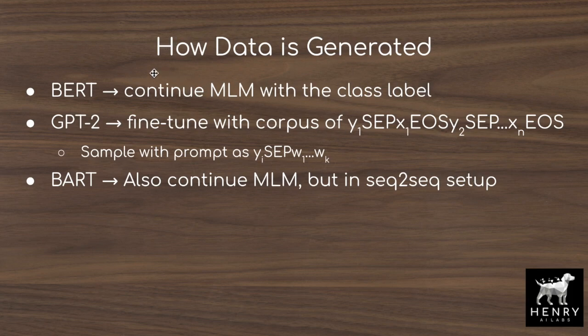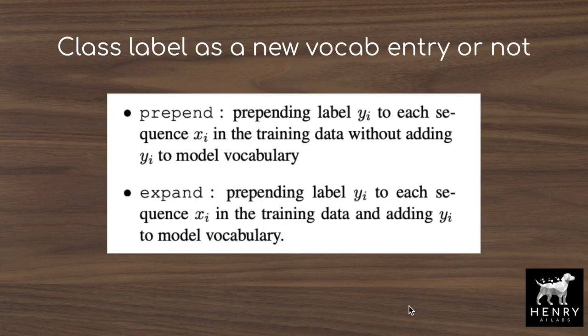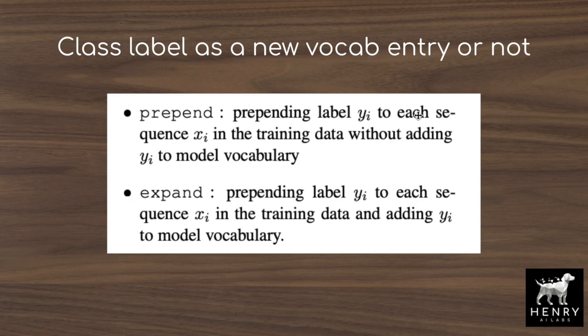For BART, it's the same idea of continuing masked language modeling but with its different sequence-to-sequence encoder-decoder architecture. Another question explored in the paper is whether the class label should be added as a new vocabulary entry or not. The class label can be treated as a separate token or processed like any other word, potentially being broken into subword tokens. The study finds that not adding it to the vocabulary works better — because when fine-tuning BERT on limited resources, it's hard to integrate a new token into the embedding table alongside all the pre-trained weights.